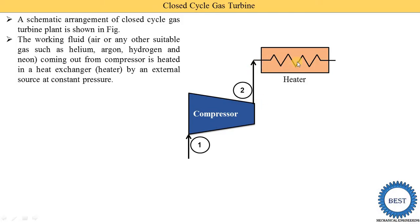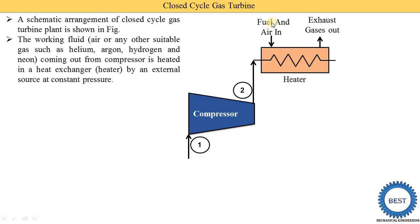This process is carried out at constant pressure in the heater — the working fluid is heated at constant pressure. Any process in the heat exchanger is considered as isobaric, meaning constant pressure. For supplying heat energy to the working fluid, fuel and air are supplied here and combustion is carried out. The combustion product is passed outside the tubes, the temperature of the working fluid is increased, and the exhaust gas from the heater is supplied to the atmosphere or used for some other process heating.